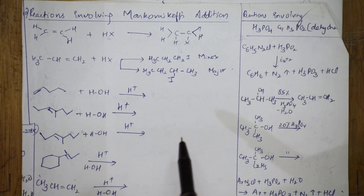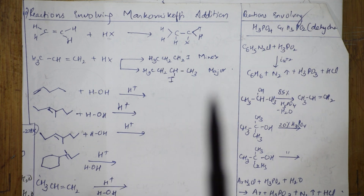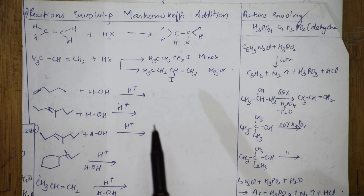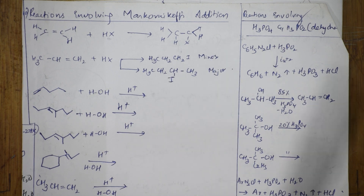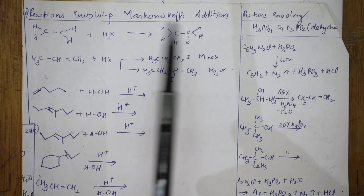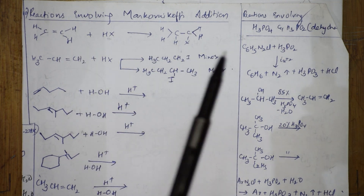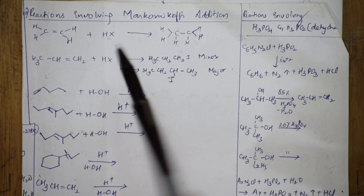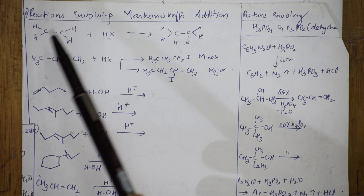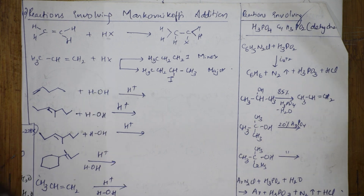Let us come back to the next set of reactions. We are going to learn about Markovnikov's addition. Whenever you see an alkene in the paper, remember there are two types of alkenes: one is symmetrical alkene and one is unsymmetrical alkene.